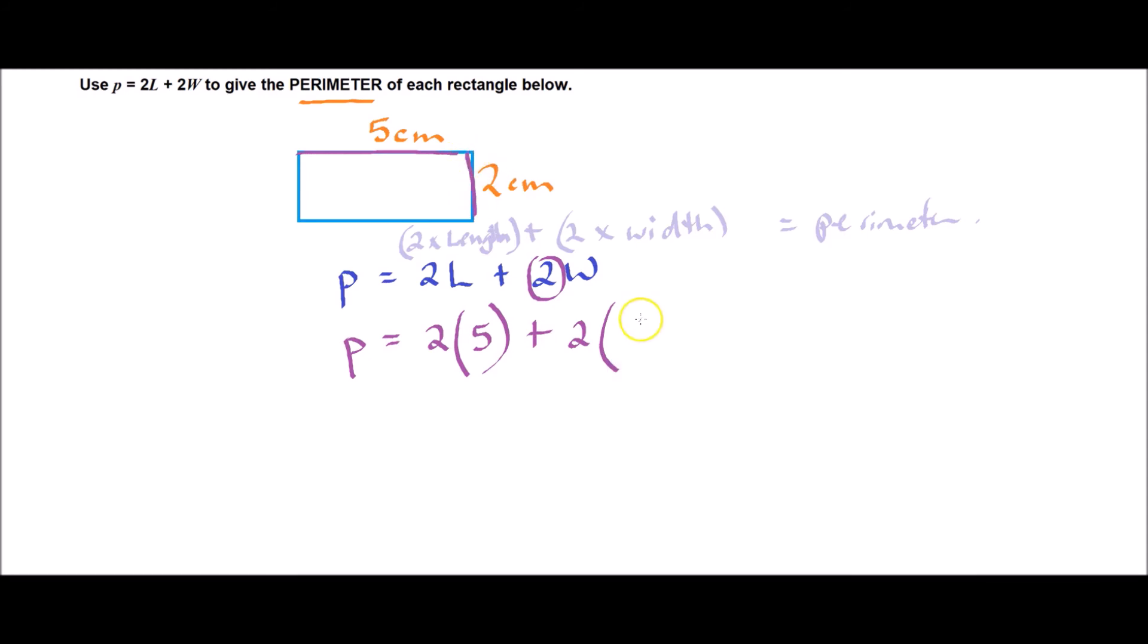So my next line, all I'm doing is basically doing whatever it says here. It says two times 5 and this is two times 2. So the next line looks like this: P equals two times five is 10 plus two times two is 4.